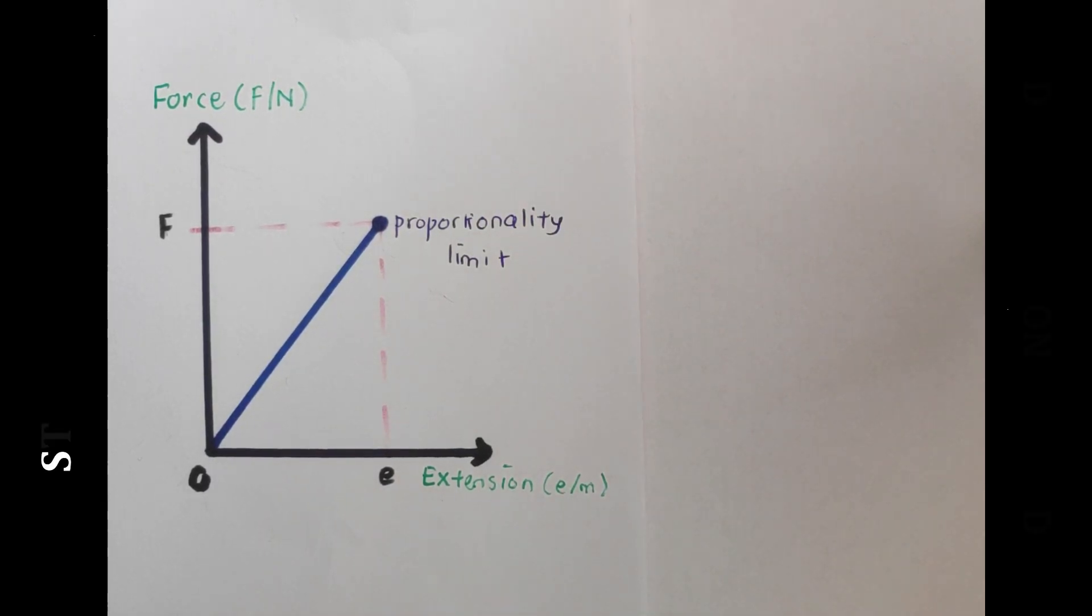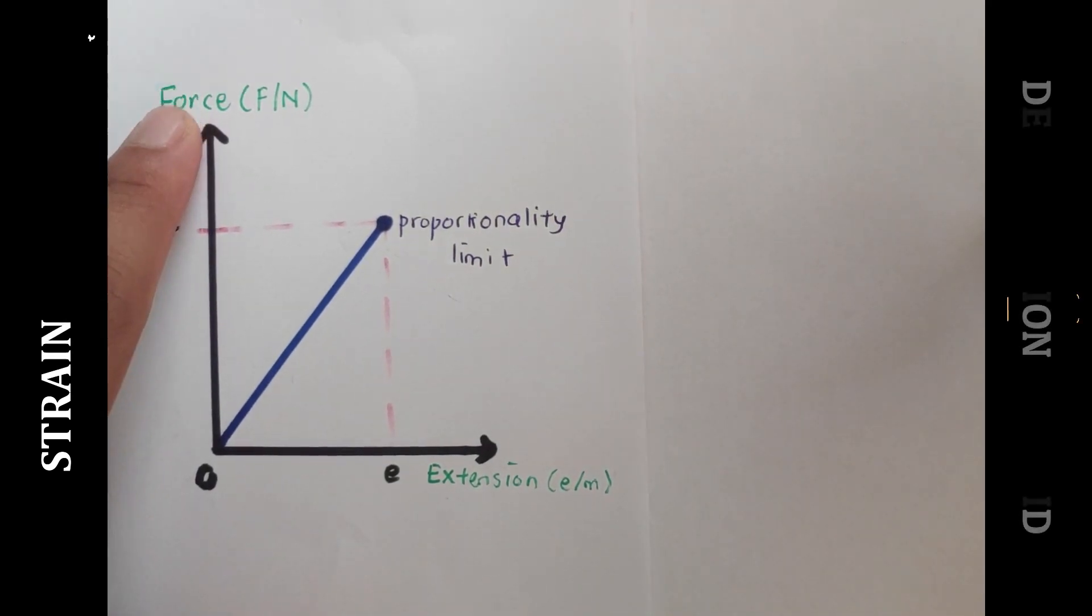When a wire is stretched by a force, work is done on the wire and strain energy or elastic potential energy is stored within it. Consider the force extension graph of this wire.